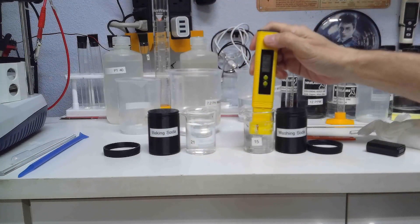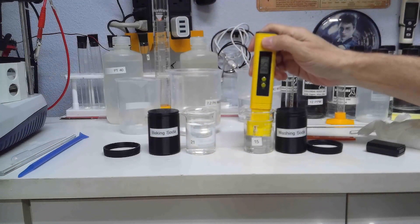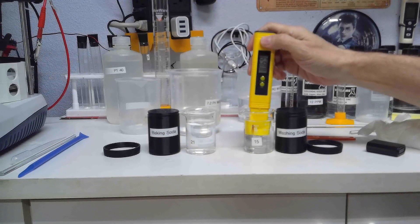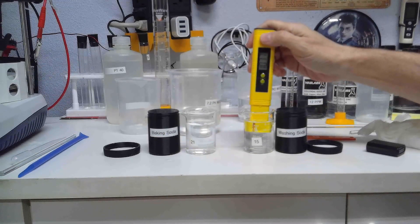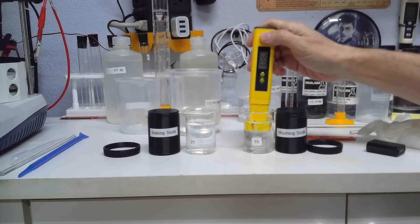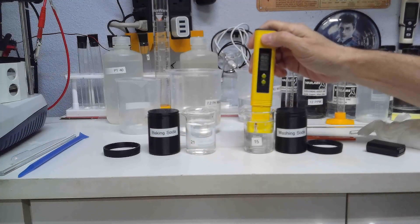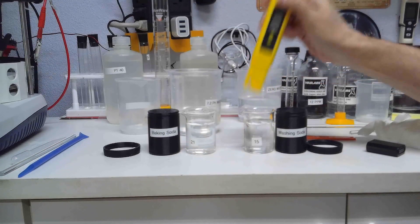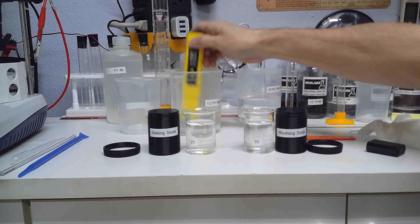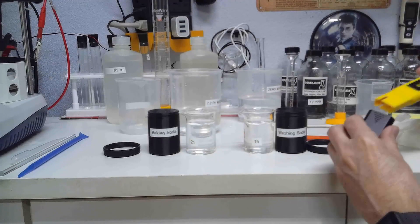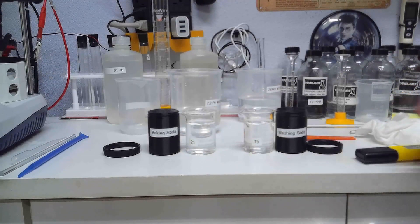We're going to stick it in here in the washing soda one and now as you can see the washing soda one is over 10.78, 79, 80, very close to 11 pH. That's the main difference between the two. The washing soda has a much higher pH than the baking soda.